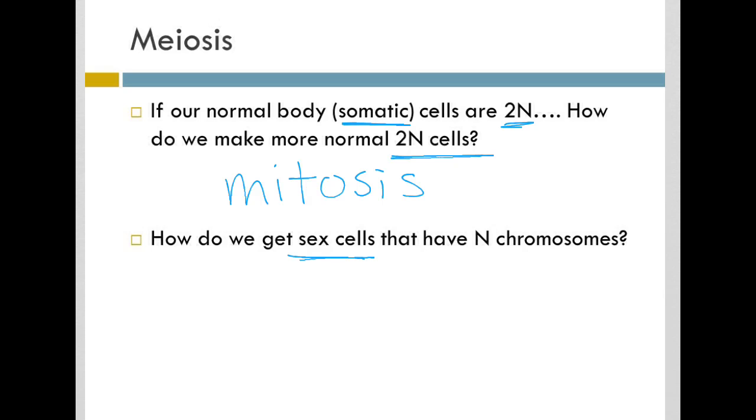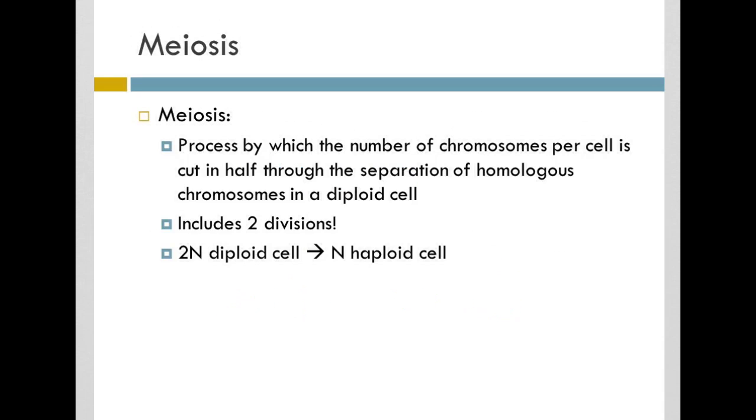However, our sex cells, egg and sperm cells, will have n number of chromosomes. They have half the total chromosome number. So we need to basically go from 2n to n. And we do that via a process called meiosis.